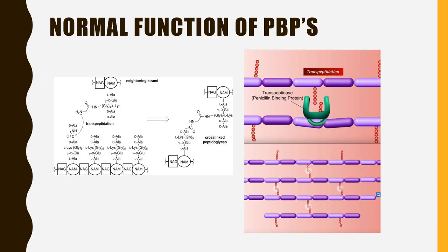Now we'll discuss the normal function of penicillin binding proteins. Penicillin binding proteins are also referred to as transpeptidases — enzymes that help in the cross-linking of peptidoglycan strands. Peptidoglycan is a peptide polysaccharide layer seen in bacterial cell walls. MRSA is a gram-positive bacteria, so it has a thicker outer layer of peptidoglycan compared to gram-negative bacteria.